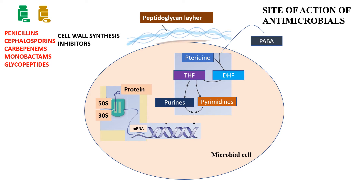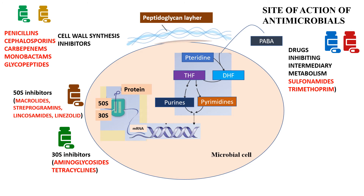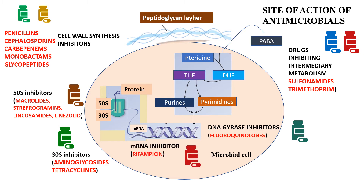Drug categories by site of action: cell wall synthesis inhibitors include penicillins, cephalosporins, carbapenems, monobactams, and glycopeptides. Inhibitors of intermediary metabolism include sulfonamides and trimethoprim. 30S subunit inhibitors include aminoglycosides and tetracyclines. 50S subunit inhibitors include macrolides, streptogramins, lincosamides, and linezolid. DNA gyrase inhibitors include fluoroquinolones. mRNA synthesis inhibitor is rifampicin.